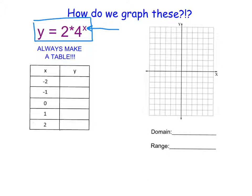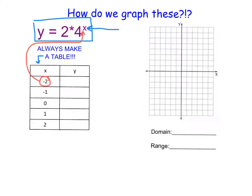When we graph exponential functions, I always suggest making a table of values. Just like we did with linear graphs, I suggest using x values from negative 2 to 2. Those aren't required values, but they give a good idea of what this graph looks like around the y-axis. We'll take each value for x, substitute it into the equation, and find the y value that pairs with it. Starting with x equals negative 2.